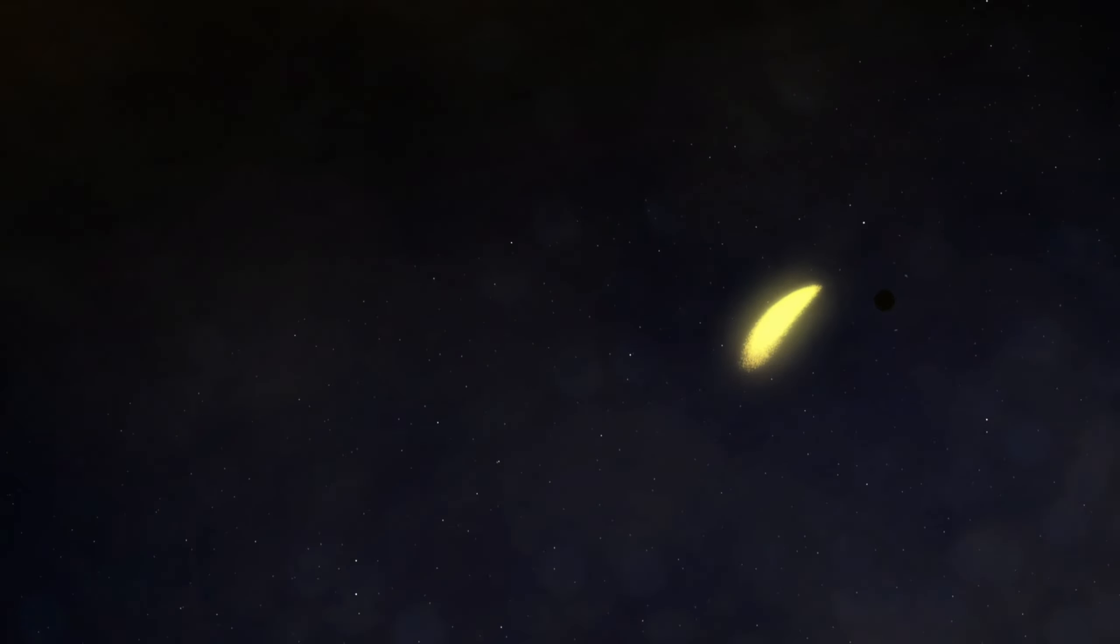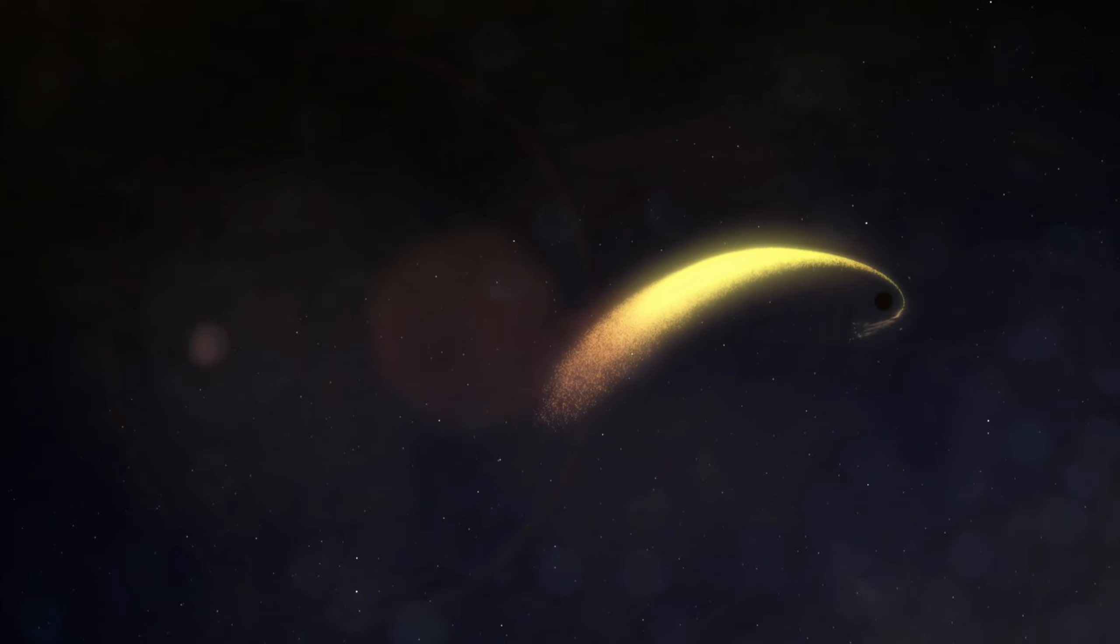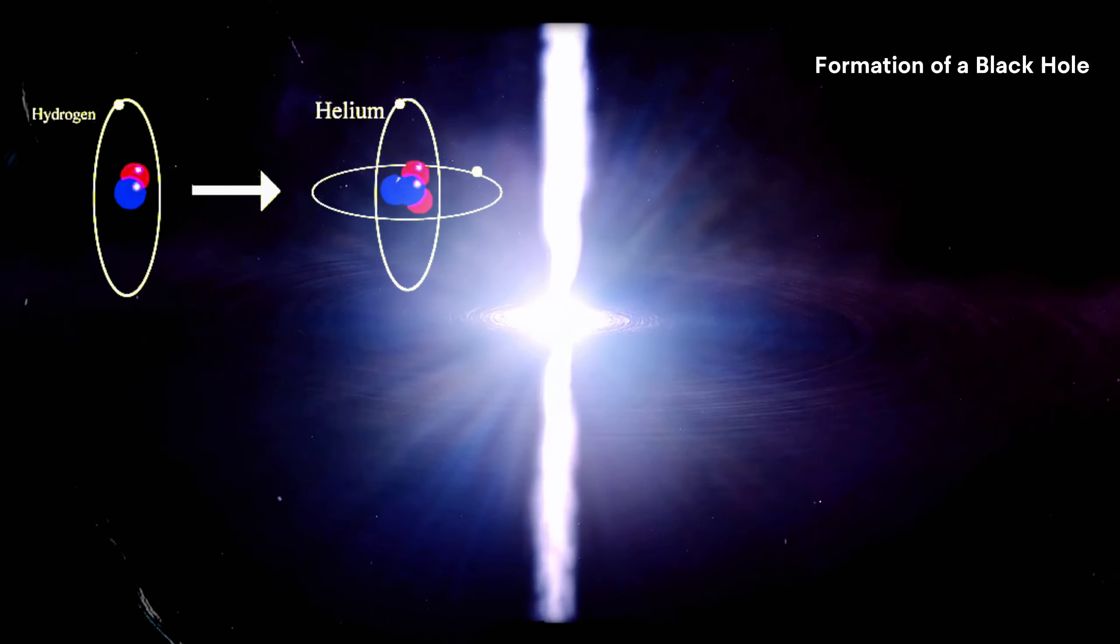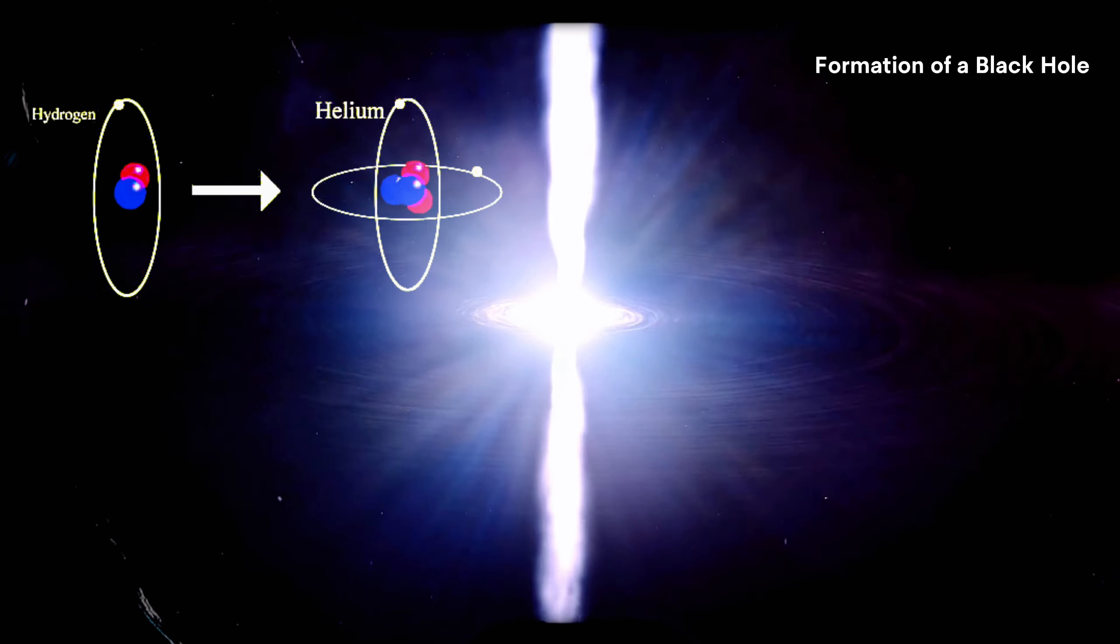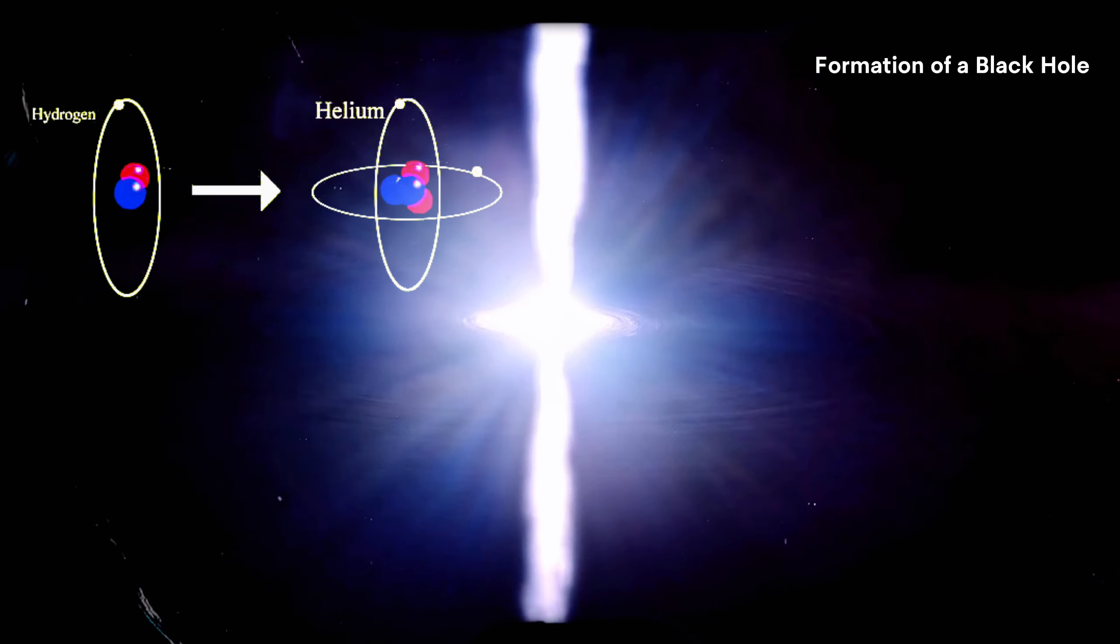Most black holes form from the remnants of a large star that dies in a supernova explosion. A collection of massive hydrogen atoms is what makes a star. In their core, hydrogen atoms fuse into helium, releasing a tremendous amount of energy. The liberated energy, in the form of radiation,